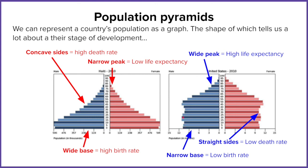Contrasting that with the United States, their birth rate is nowhere near Haiti's — they've got a quite narrow base, which means a low birth rate. The sides fluctuate a bit but are actually quite straight, meaning the babies being born are making it into older years, so the death rate is quite low. The peak of the US pyramid is much wider than Haiti's — a wide peak represents higher life expectancy. These population pyramids show us how a population is structured and allow comparisons between countries. This links to something called the Demographic Transition Model, or DTM, which you could research on your own.